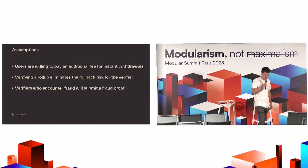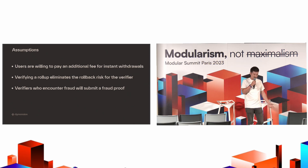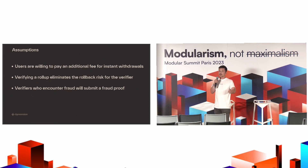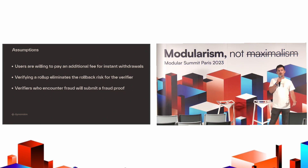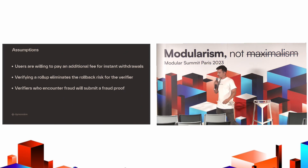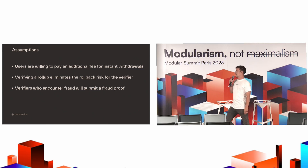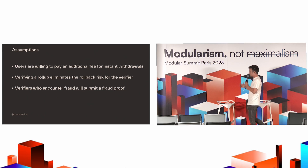To understand how eIBC works, we need to address three assumptions. First, users are willing to pay an additional fee for instant withdrawals. Second, verifying a rollup eliminates the rollback risk for the verifier — if I run a full node and verify the state, I've eliminated the risk of rollback. Third, verifiers who encounter fraud will submit a fraud proof. These are pretty feasible assumptions that help us understand the eIBC flow.